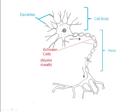Myelin in the Schwann cells makes peripheral nerves appear white. Neurons in the central nervous system have no myelin sheath and are therefore gray in color. Gaps between Schwann cells are called nodes of Ranvier. Electrical impulses jump between them, resulting in a faster impulse.